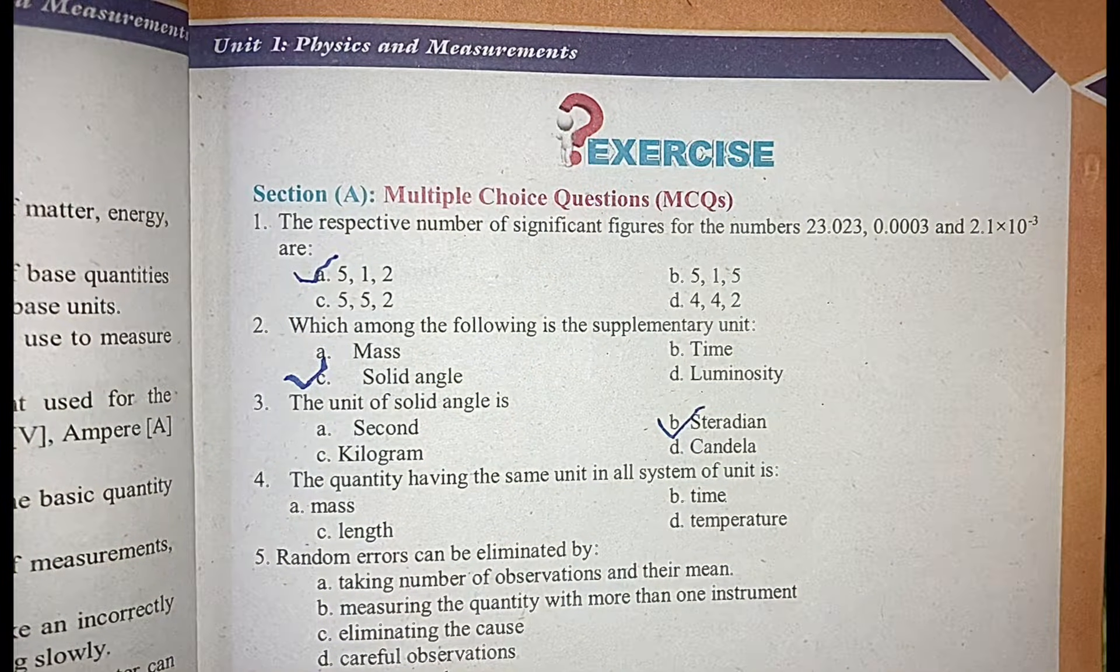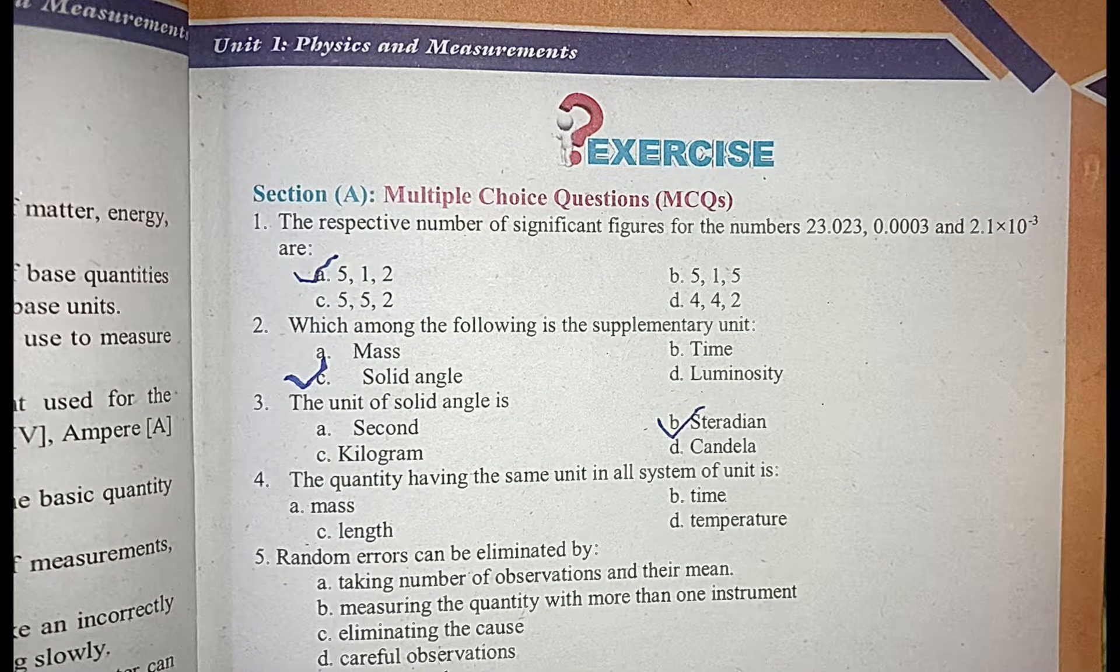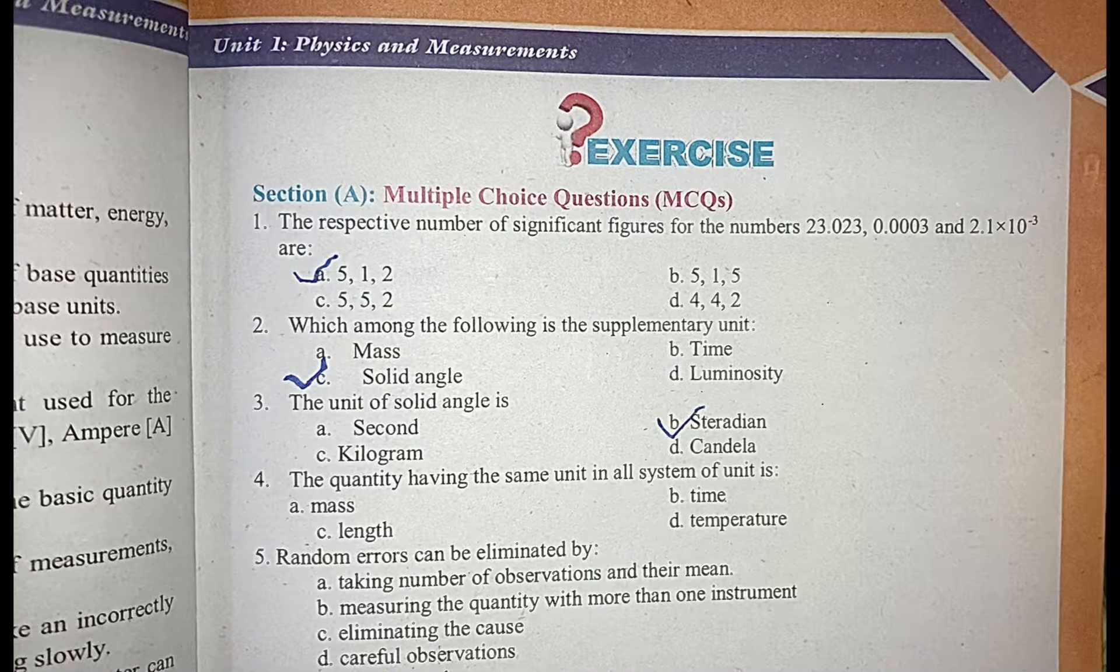MCQ number 4: the quantity having the same unit in all systems of unit is time.